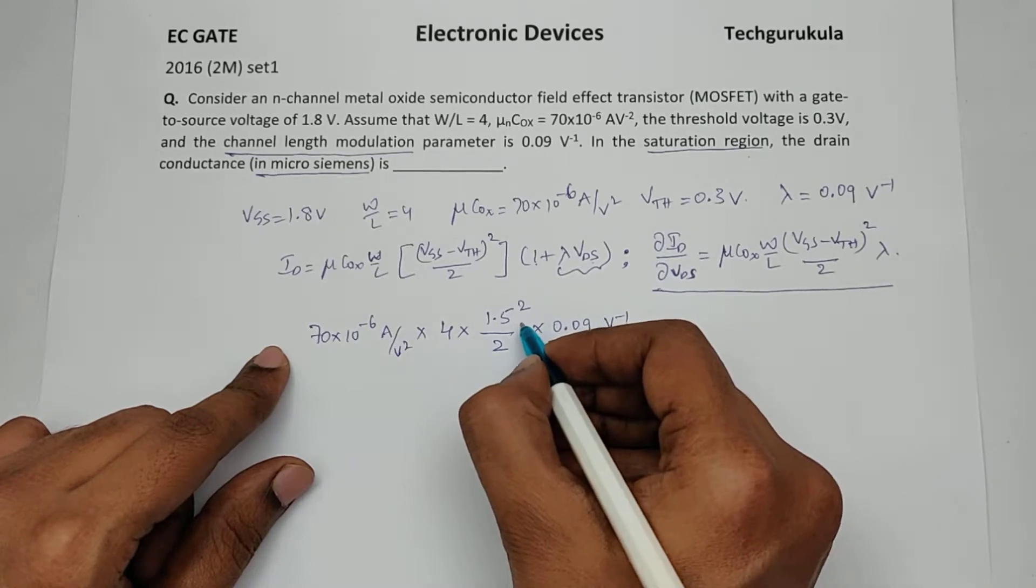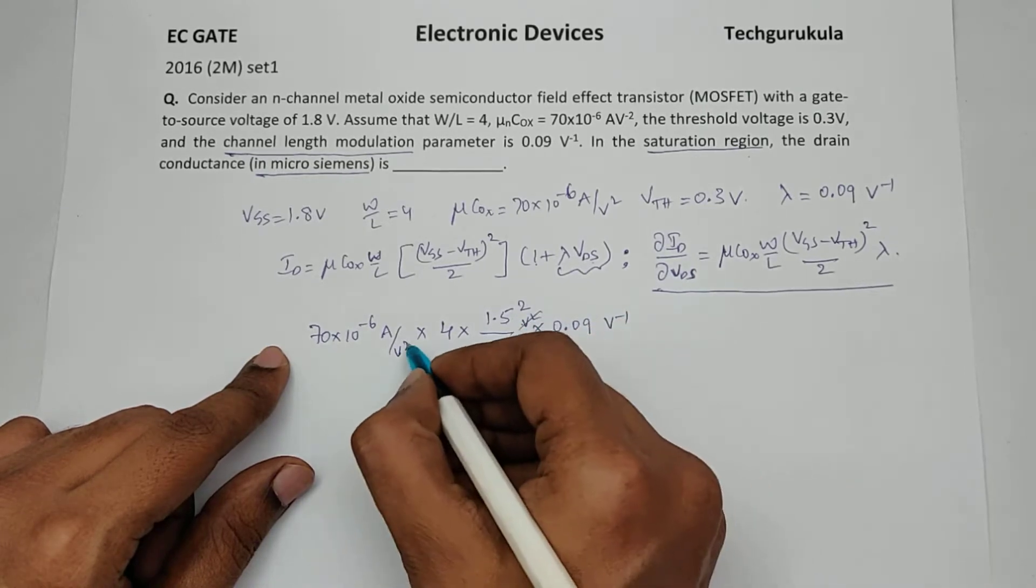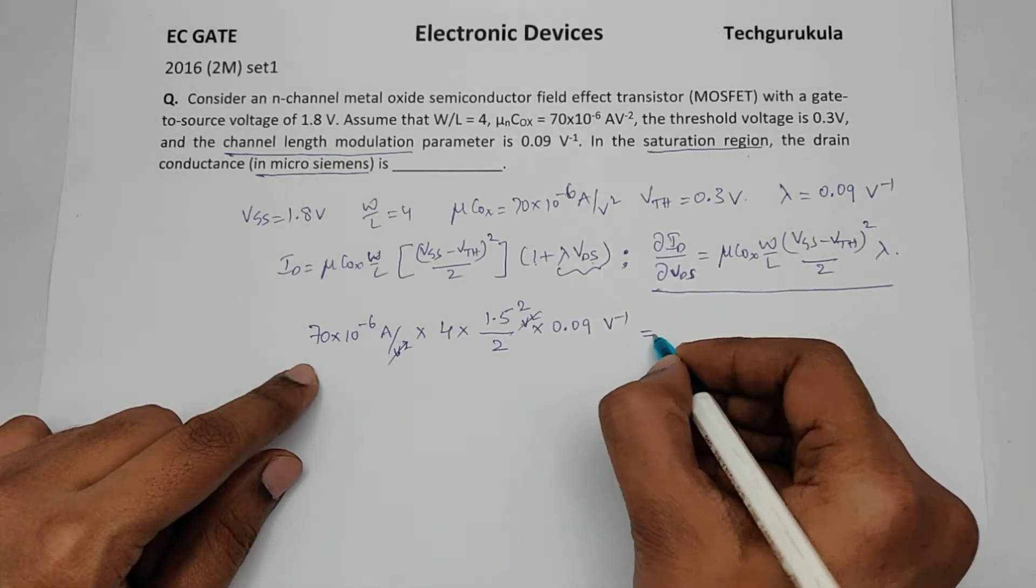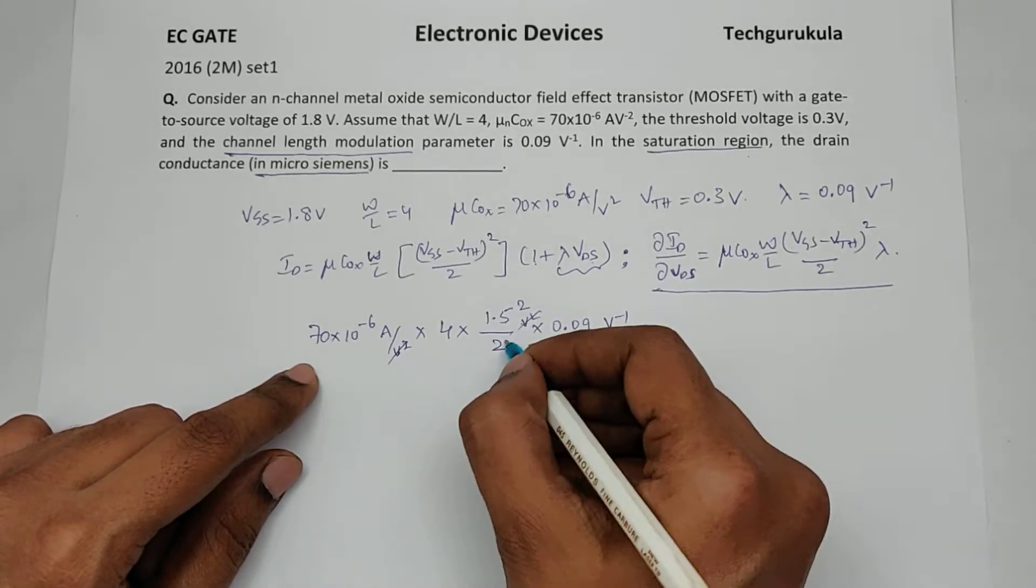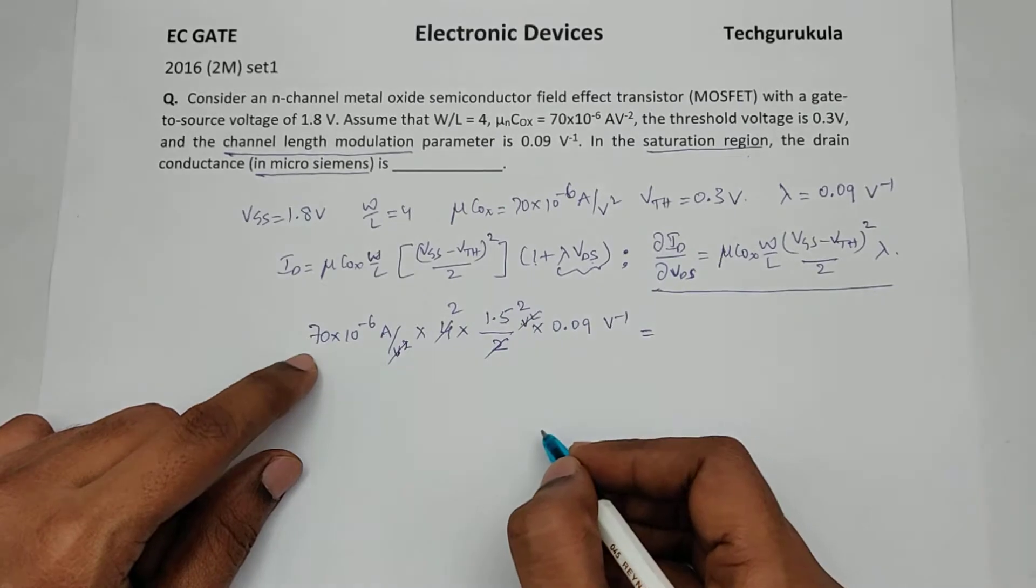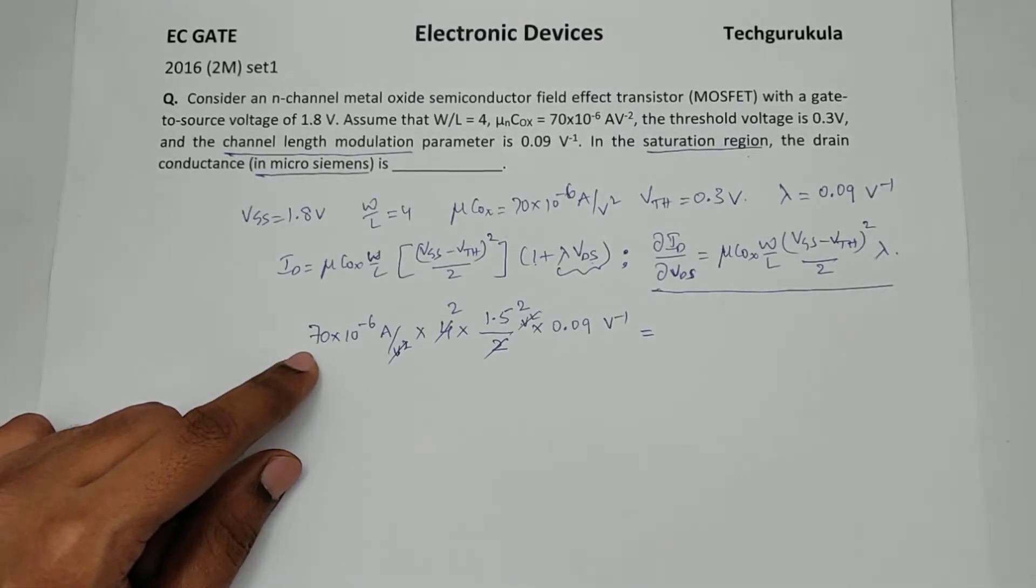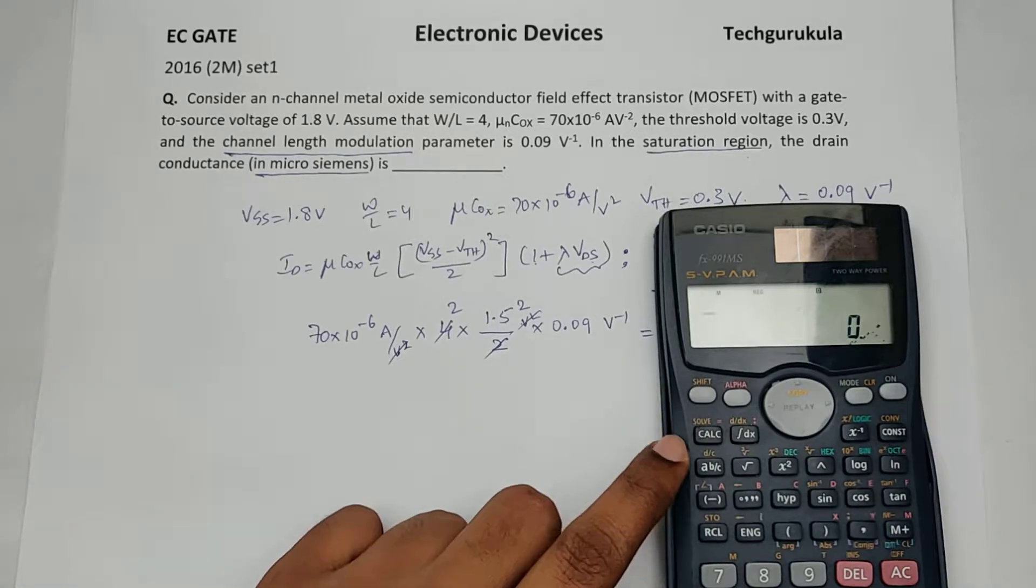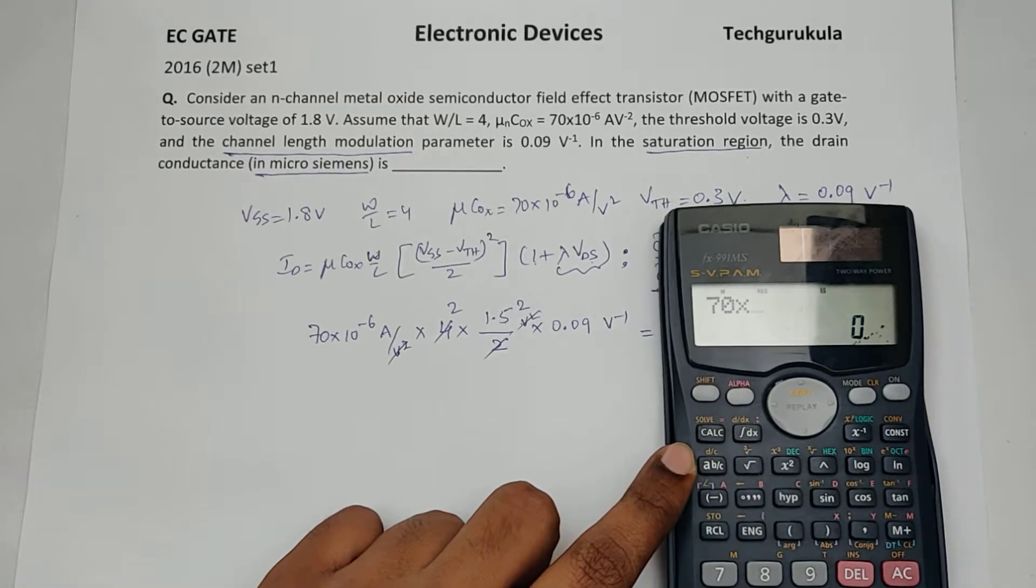Here we have volt square, let's cancel that. Now this is equal to, let's calculate: 70 times 2 times 2.25 times 0.09.